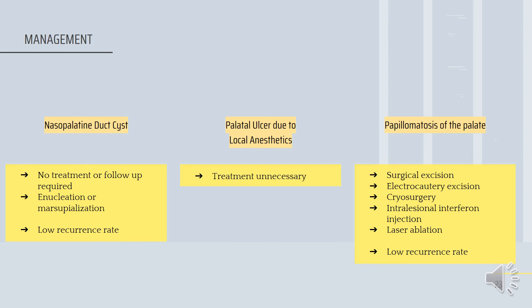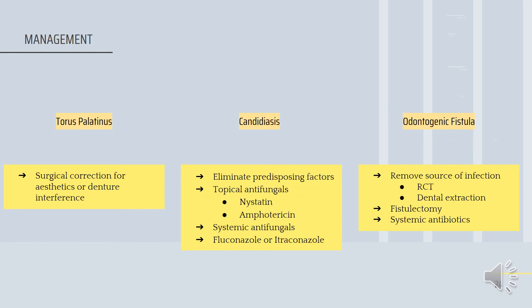For palatal ulcer due to local anesthetics, treatment is unnecessary. For papillomatosis of the palate, surgical excision is the treatment of choice; however, the physician may also opt for electrocautery excision, cryosurgery, intralesional interferon injection or laser abrasion, with a low recurrence rate for single-type lesions. For torus palatinus, the lesions are entirely benign and surgical correction is only indicated for aesthetic reasons or interference with denture wearing. For candidiasis, treatment is directed at elimination of predisposing factors, followed by topical antifungals such as nystatin or amphotericin. In persistent cases, systemic antifungals may be indicated, and males with candidiasis and suspected HIV infection may respond to fluconazole or itraconazole.